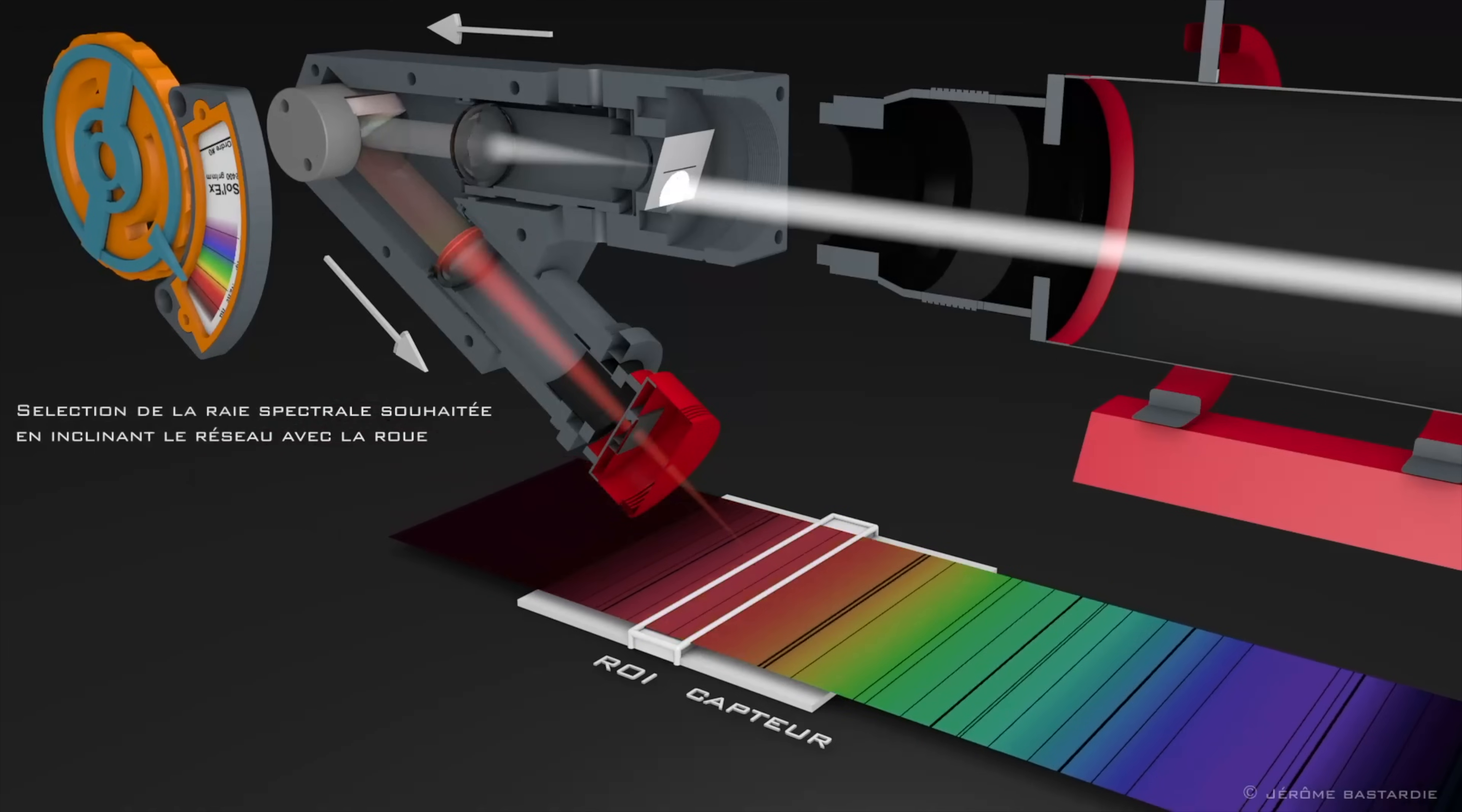Next, there's collimation and dispersion. The collimating lens makes the light rays parallel. A diffraction grating spreads the light into its constituent wavelengths, forming a spectrum. Think of it like a rainbow.